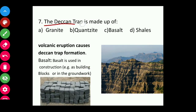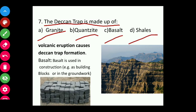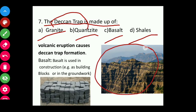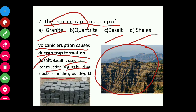Question seven: The Deccan Trap is made up of granite, quartzite, basalt, or shells? The Deccan Trap, as seen in the picture, is formed by volcanic eruptions. Volcanic eruptions cause Deccan Trap formation. The answer is basalt. Basalt is also used in construction, for example in building blocks or groundwork.